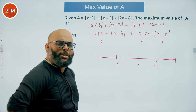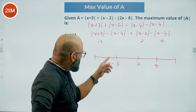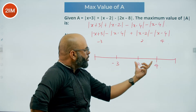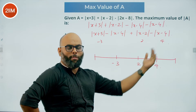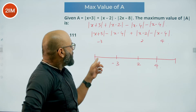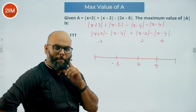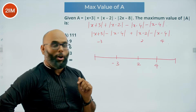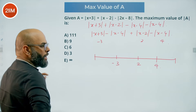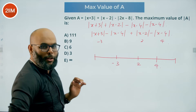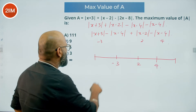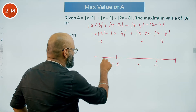x could be anywhere — less than minus 3, between minus 3 and 2, between 2 and 4, or greater than 4. For every case we need to figure out what value a takes, and find the maximum value of modulus of a. We're looking at the magnitude of the value.